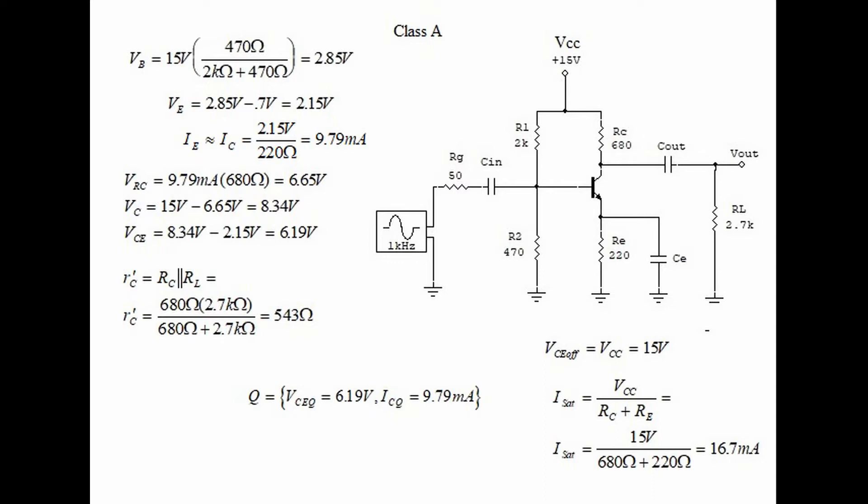As always we start with VB. Voltage on the base is equal to 2.85 volts. Then voltage on the emitter equals 2.15 volts, and then current through the emitter, which is approximately equal to current through the collector, is 9.79 milliamps.